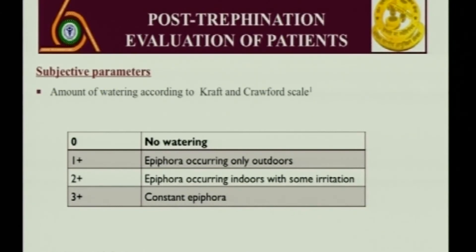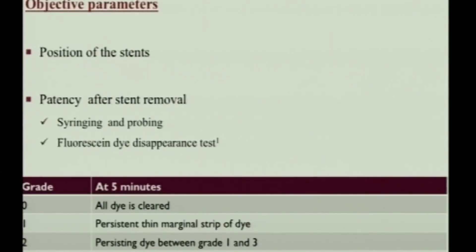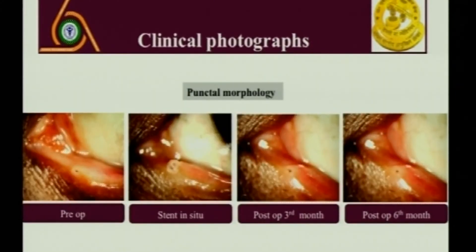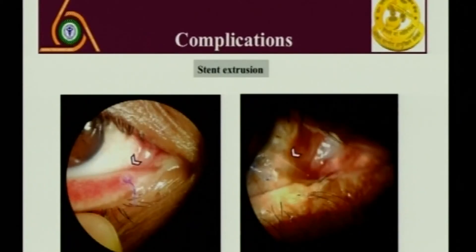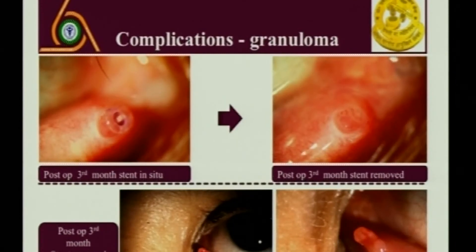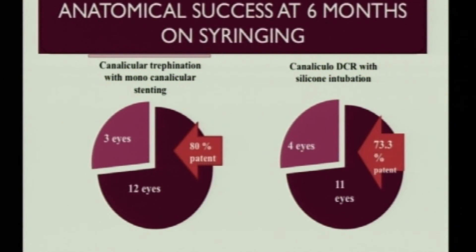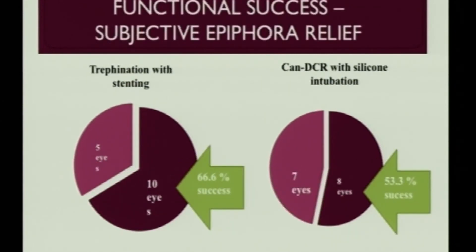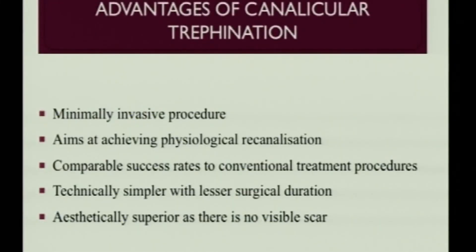Post-trefinition evaluation can be done by subjective parameters such as grading epiphora, or objective parameters assessing patency via fluorescein dye disappearance test (FDTT) and syringing. Some pictures show punctal morphology after the stent. Complications include stent extrusion and rare granuloma formation. Anatomical success is usually high, but functional success on FDTT and syringing comes down to about 60–66 percent in this series, with functional success on FDTT in a similar range.